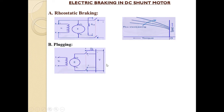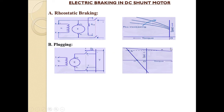Next is plugging in the DC shunt motor. In plugging, we interchange the polarities of the supply — the armature terminals change from plus/minus to minus/plus. This is shown in the corresponding circuit diagram. At the time of plugging, the torque travels from positive polarity to negative polarity and the speed is gradually reduced. After point C, the motor rotates in the opposite direction of rotation.